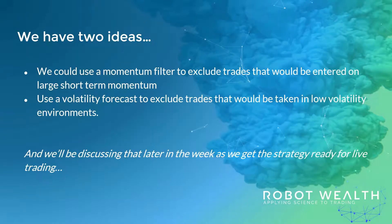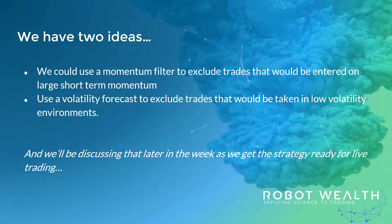We want to get profit per trade up, and we've got two main ideas. The first one: we could use a momentum filter to exclude trades that would be entered on large short-term momentum. At higher frequencies or short timeframes, we quite often see short-term momentum effects that we can use to avoid trading when we see extreme short-term momentum.